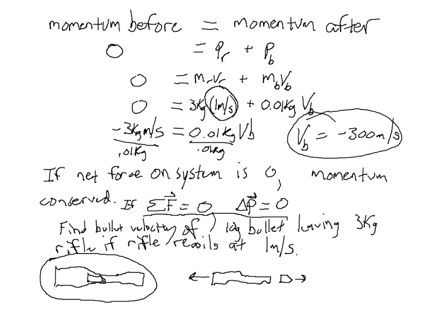You can see how the fact that there's no net force on this system, and momentum being conserved, makes this problem much easier to solve than if you tried to use Newton's laws. If you attempted to use Newton's laws, you'd need to know what force the rifle was exerting on the bullet, how long it was exerting that force, and since the force probably wouldn't be constant you'd need calculus. Conservation of momentum is a very easy way to solve this problem.